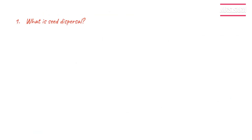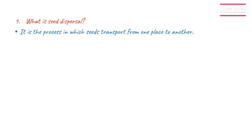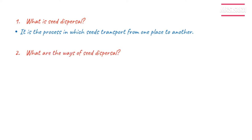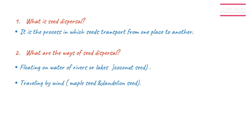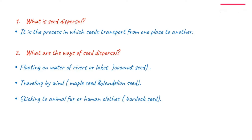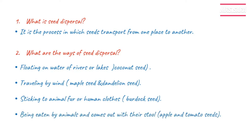So what is seed dispersal? It is the process in which seeds transport from one place to another. What are the ways of seed dispersal? Number one, floating on water of rivers or lakes like the coconut seed. Number two, traveling by wind like the maple seed and dandelion seed — they are light seeds, that's why they travel by wind. Number three, sticking to the animal's fur or human clothes, and our example is the burdock seed, which has spines that's why they stick. Number four, by being eaten by animals and coming out with their stool, and our example is the apple and the tomato seeds.